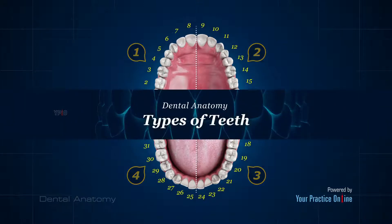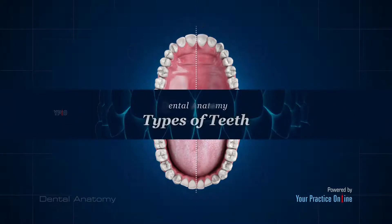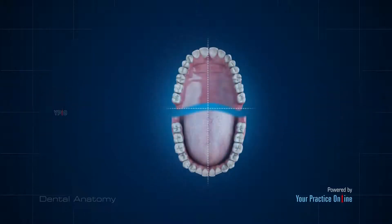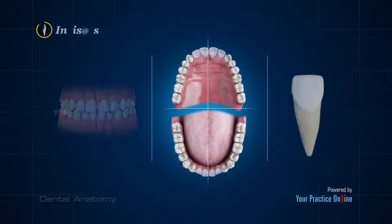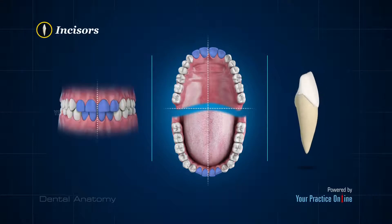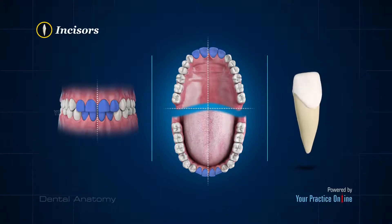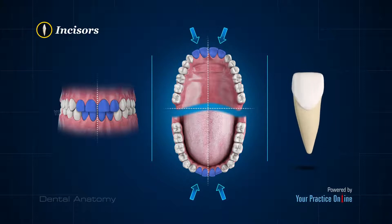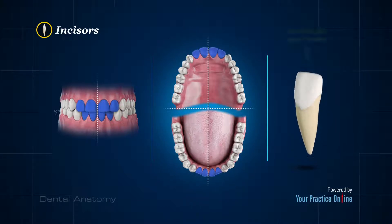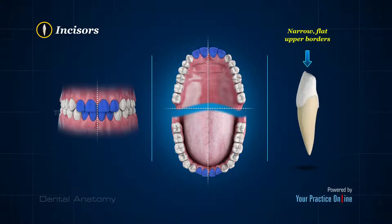Types of Teeth: Teeth are categorized based on their structure and function. Incisors are the front teeth of the upper and lower jaws. There are two in each quadrant, close to the midline. Incisors have narrow, flat upper borders that help them cut through food.